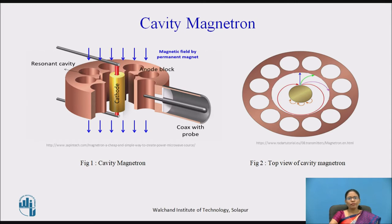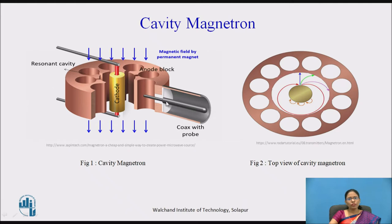Let us revise the magnetron with its construction and working. A magnetron consists of a cathode at the center. Surrounding it are the anode cavities. Electrons are emitted from the cathode and move towards the anode. In the perpendicular direction there is a magnetic field, and the oscillations generated inside the cavities are collected using a probe.